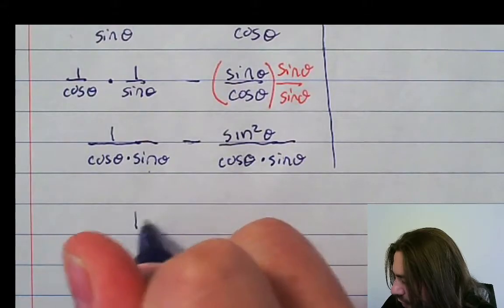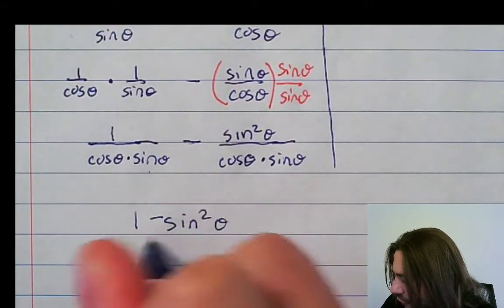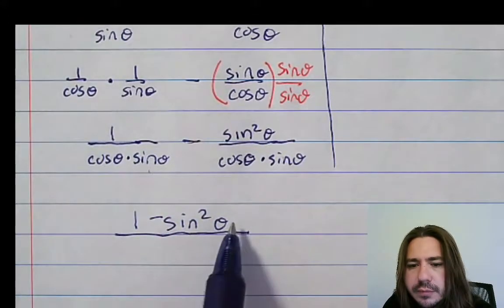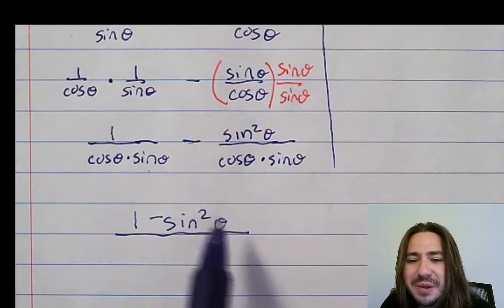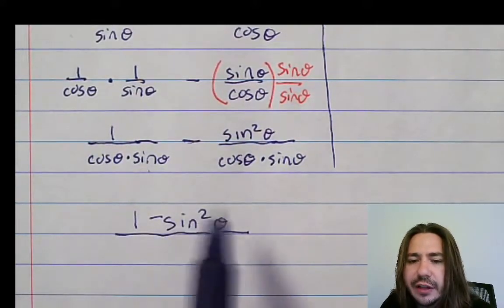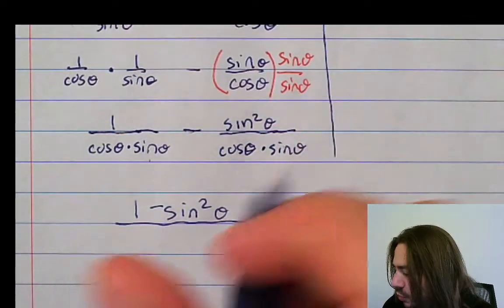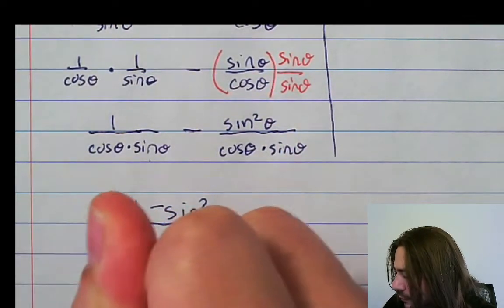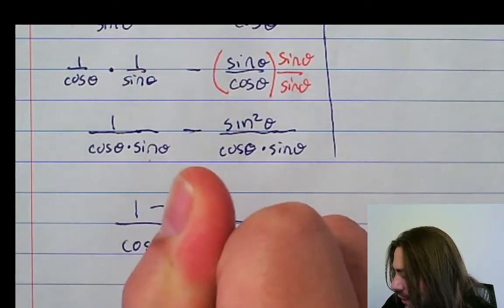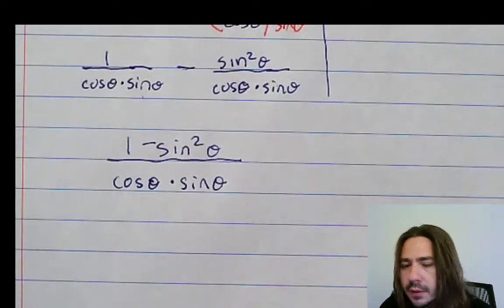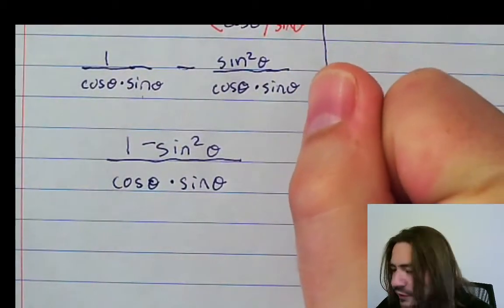So we've got the common denominator. We can go ahead and combine these fractions. We've got 1 minus sine squared theta. That should kind of catch your attention. Like, hey, that looks like a Pythagorean identity. So we're probably going to need to use that. Times sine theta. And that's, in fact, exactly what we want to do.